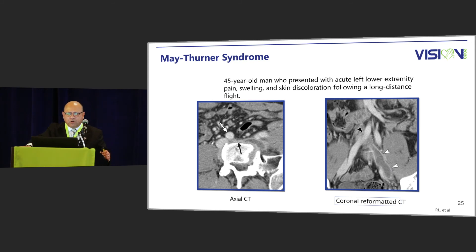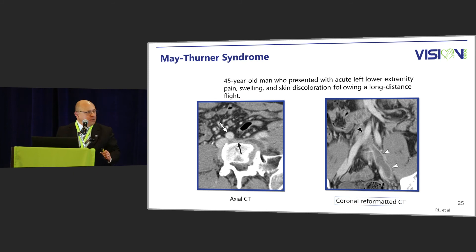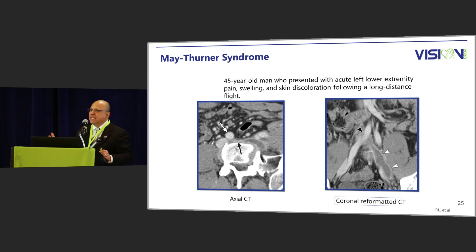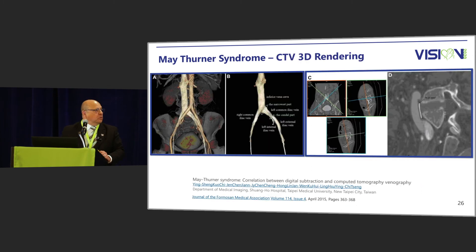This is a 45-year-old man who presented with acute left lower extremity pain, swelling, and skin discoloration following a long-distance flight. Axial CT demonstrates the iliac artery compressing the iliac vein, and on the coronal view the left iliac vein is acutely thrombosed — giving indication of the extent of the clot and what needs to be done if one is going to perform thrombolytics.